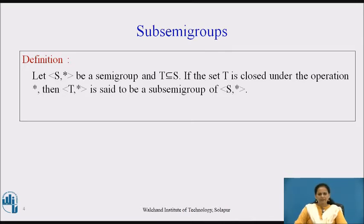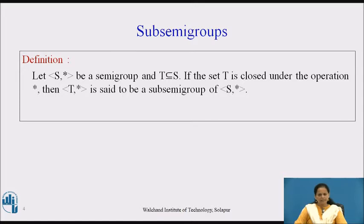Here is the definition for Sub-Semi-Group. Let (S, *) be a semi-group and T be any set which is a subset of S. If the set T is closed under the operation *, then (T, *) is said to be a sub-semi-group of (S, *).